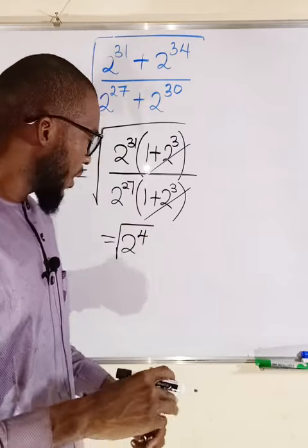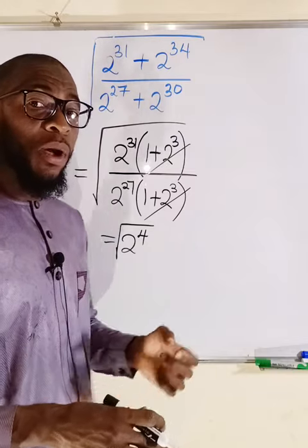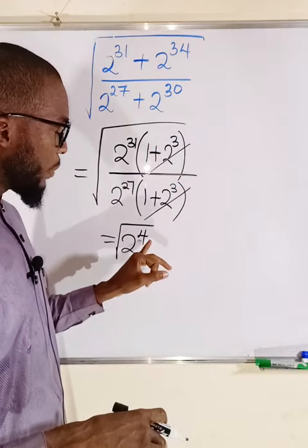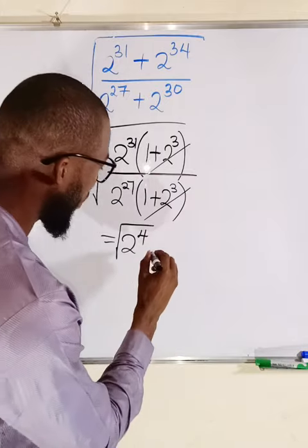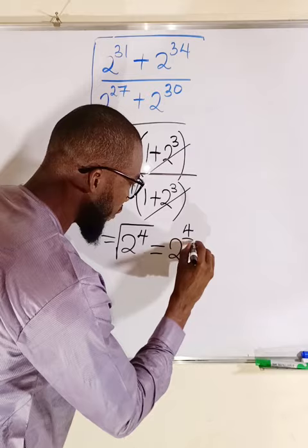And you know that square root can also be written in an exponential form. That number to the power of 1 divided by 2. So we are going to multiply 4 by 1 over 2. This is the same thing as 2 to the power of 4 divided by 2.